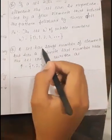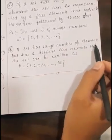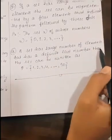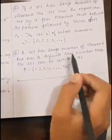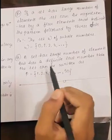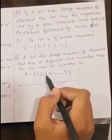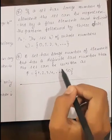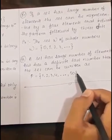If a set has large number of elements but has a definite last number, then the set can be written as P = {1, 2, 3, 4, ..., 50}.